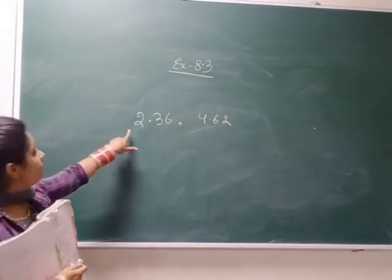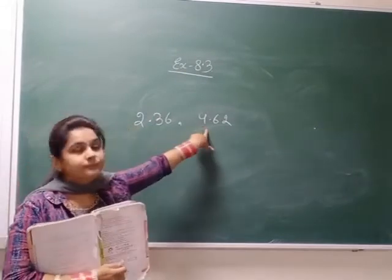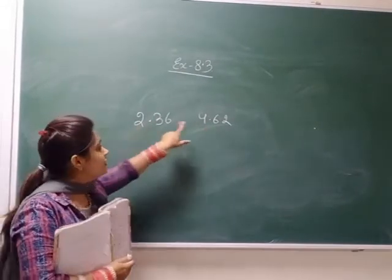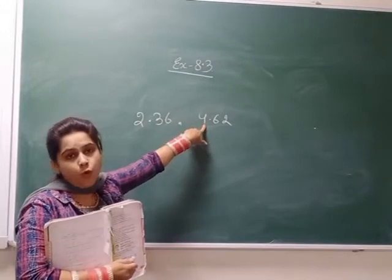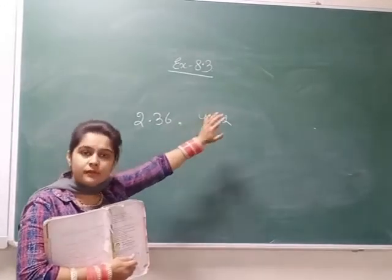First, we will compare the first digits. First, we compare which is greater. All number 4. So, this one is greater.